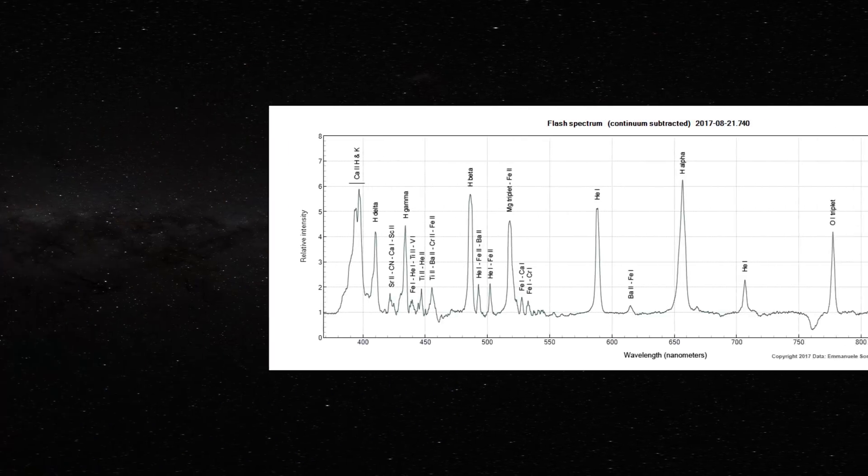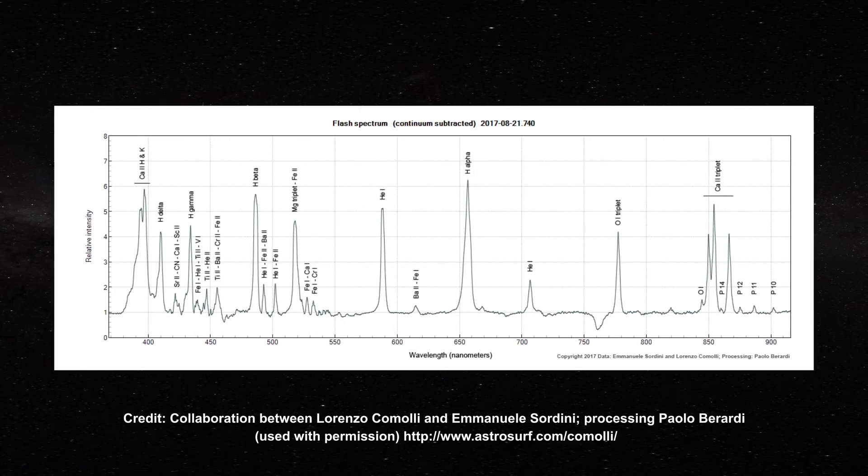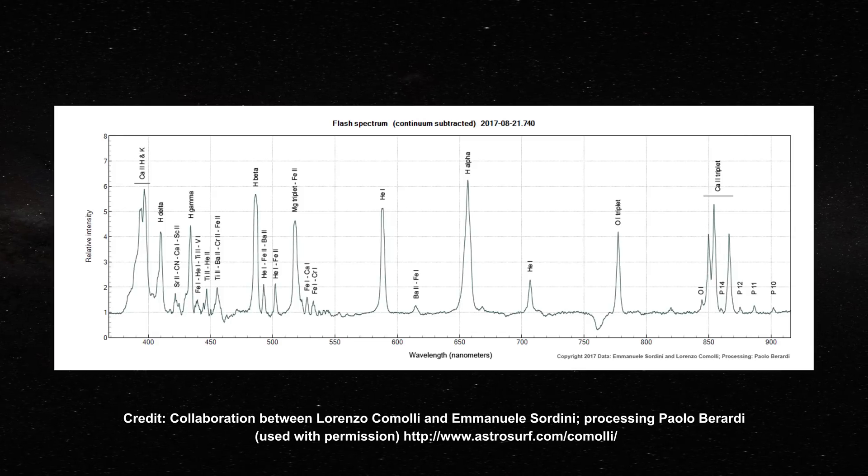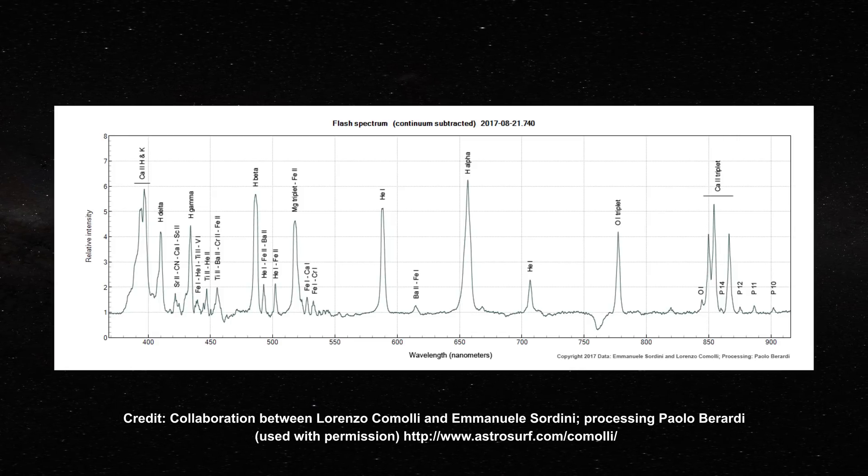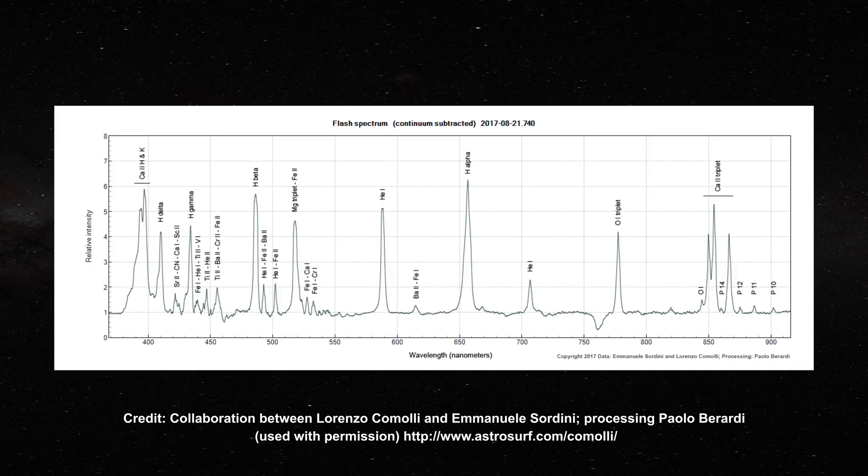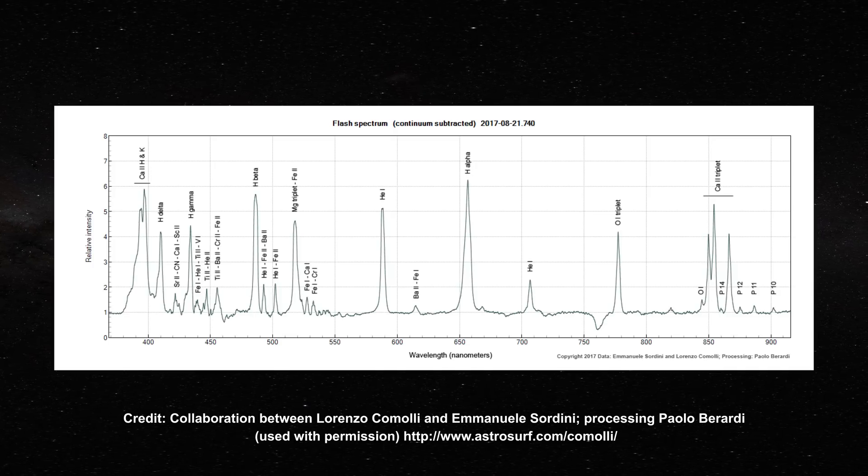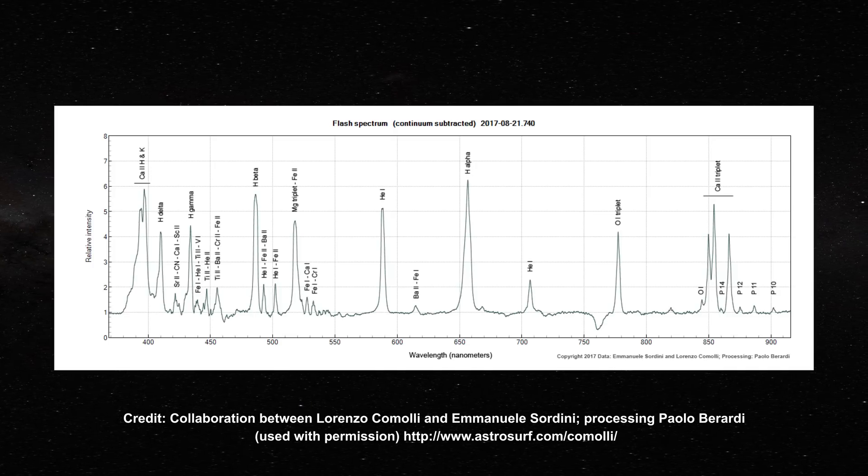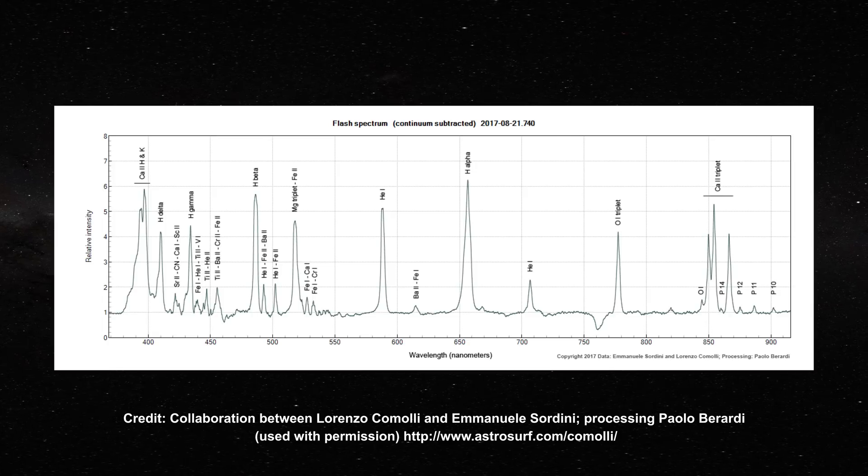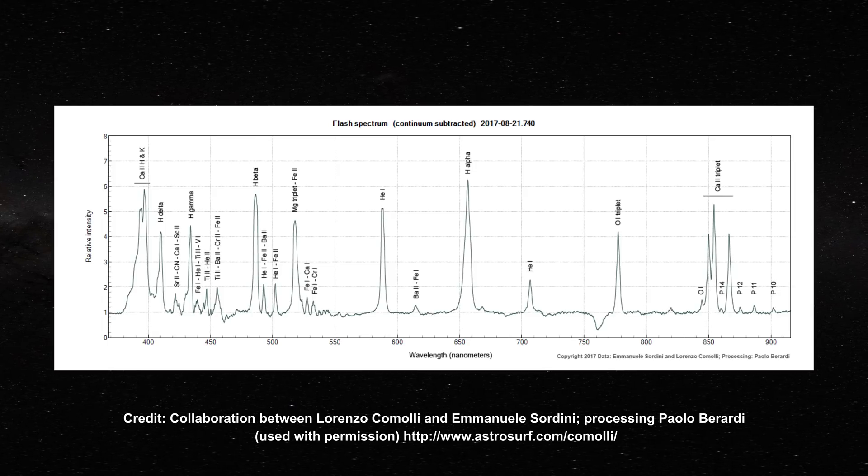Now, before we end, there is one more thing to notice about the spectra from the chromosphere, which suggests that nothing is random with these emission lines. Notice how strong all the lines are relative to the lines of hydrogen. Now, the question of intensity in emission lines is complicated by the fact that different atoms can have different inherent line strengths. Still, there is something to be noted.